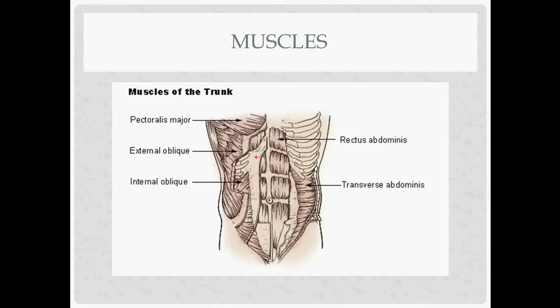For muscle layers: you have the external oblique going like your hands in your pockets, the internal oblique making the opposite angle, and the transversalis deep to those running side to side. The other one to know is the rectus abdominis, running from the pubic symphysis up to the xiphoid.